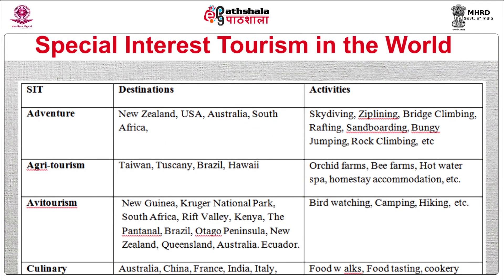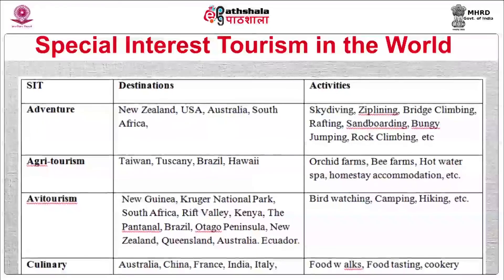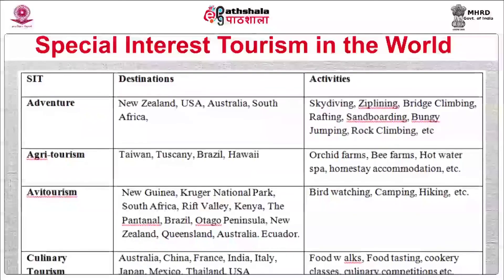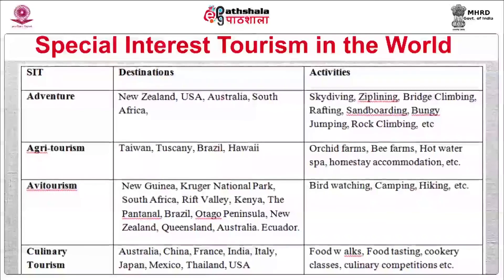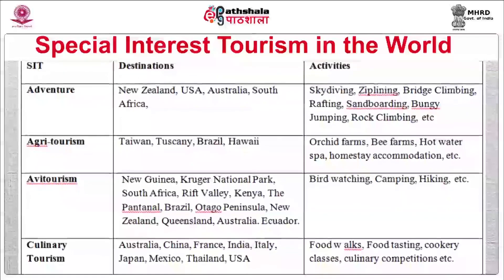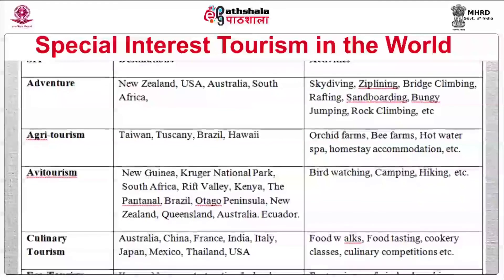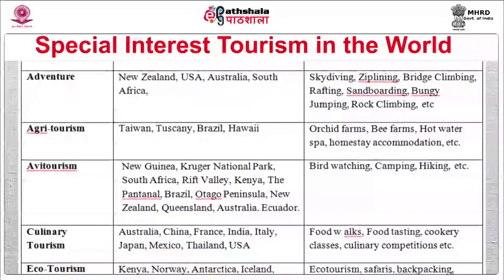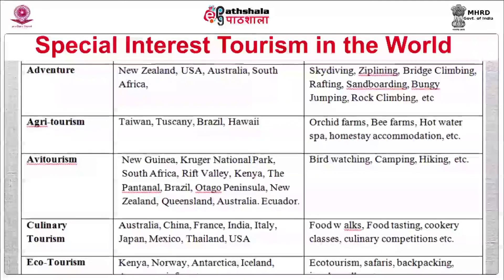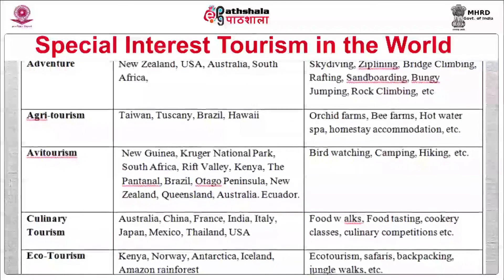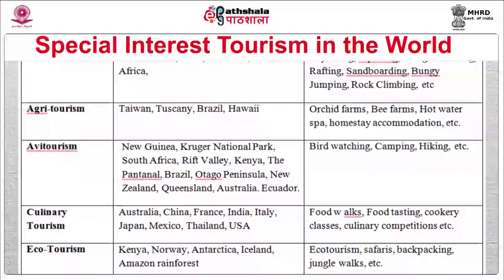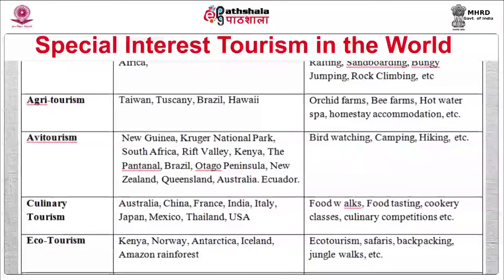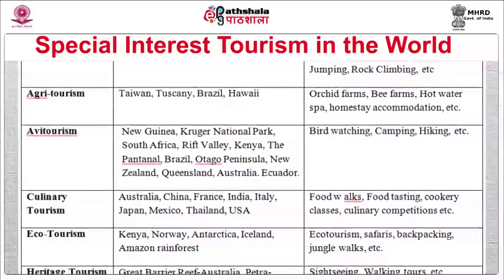For adventure tourism worldwide, famous countries include New Zealand, USA, Australia, and South Africa, offering activities such as skydiving, ziplining, bridge climbing, bungee jumping, rafting, sandboarding, and rock climbing. For agritourism, Taiwan, Brazil, and Hawaii are notable. For avitourism, destinations include New Guinea, Kruger National Park in South Africa, Rift Valley in Kenya, New Zealand, Queensland in Australia, and Ecuador, with activities like bird watching, camping, and hiking.